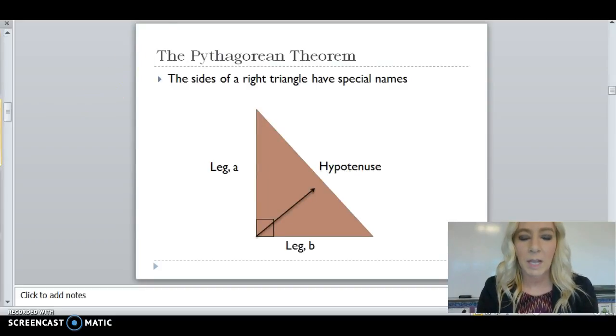So in the Pythagorean Theorem, there's three parts to the sides of the triangles, and they each have special names. The hypotenuse, not hippopotamus, the hypotenuse is the side directly across from the right angle.